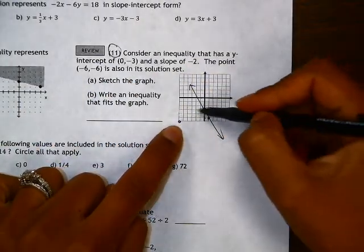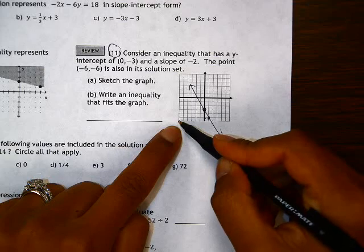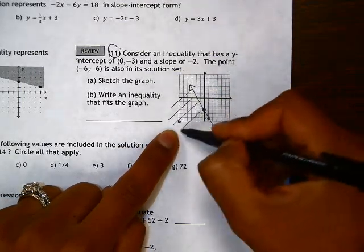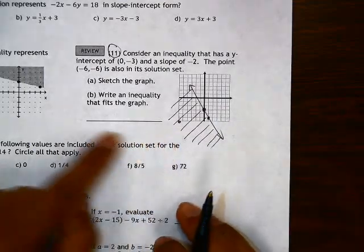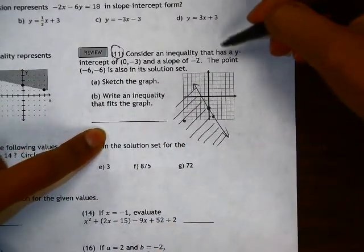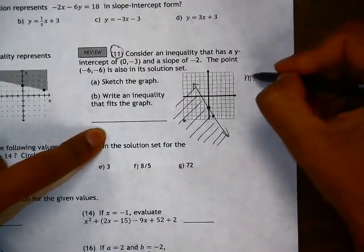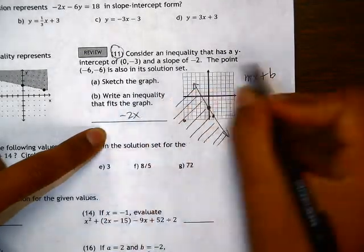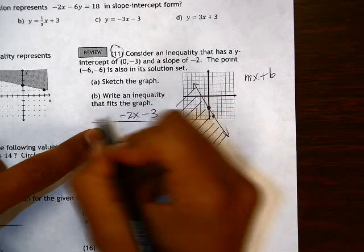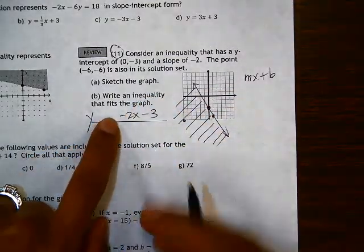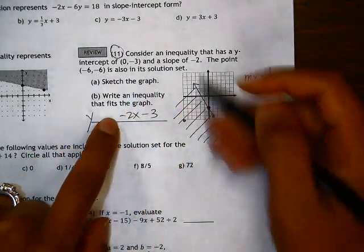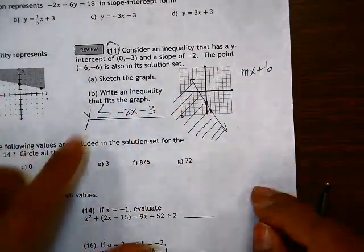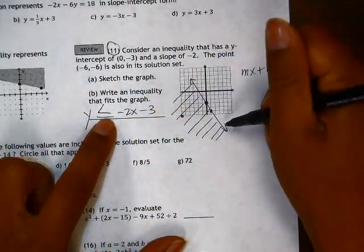If we know that this point is part of the solution set and we're dealing with an inequality, that means the shading is on this side of the line. And the inequality, we know that the mx plus b portion will be slope equal to negative 2, y-intercept equal to negative 3. Then the inequality symbol, since we shaded below the line, is less than or equal to. We could have also said it was just less than if we had drawn a dotted line.